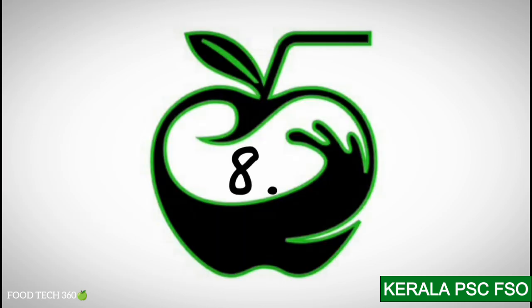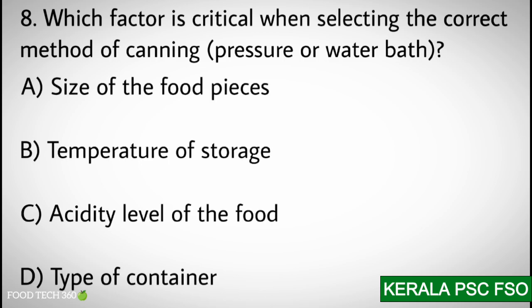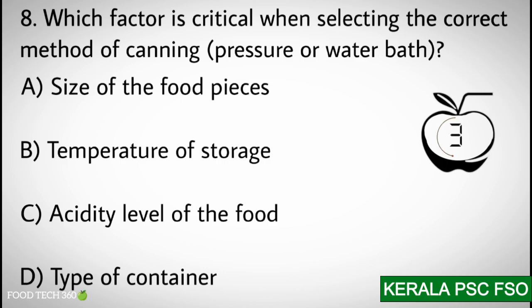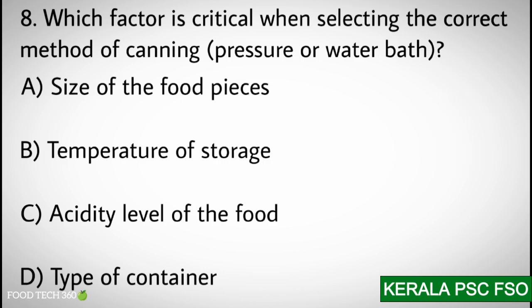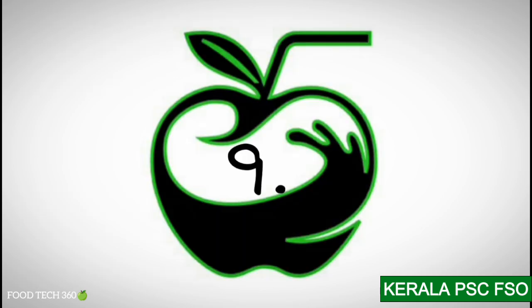Q8. Which factor is critical when selecting the correct method of canning? Options: A) Size of the food pieces, B) Temperature of storage, C) Acidity level of food, D) Type of container. Correct answer: C) Acidity level of food.